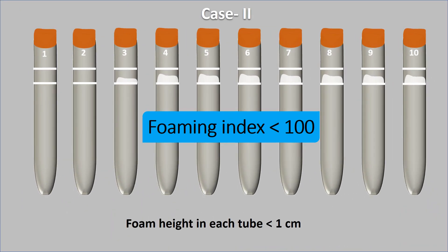There is also the possibility that in none of the test tubes does the foam height reach the 1 cm mark. In this case, the foaming index is less than 100, and there is no need to repeat the practical — you can directly write foaming index less than 100. Note that there is no unit for foaming index.